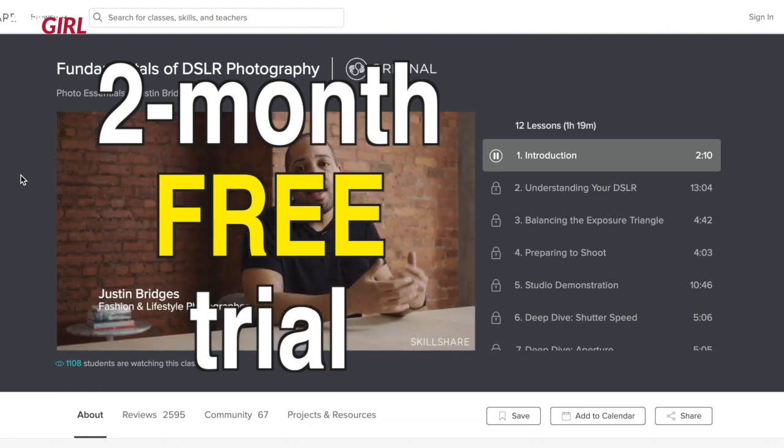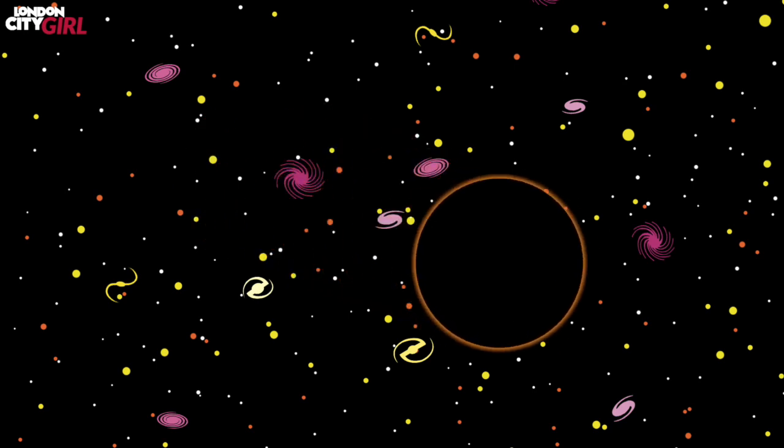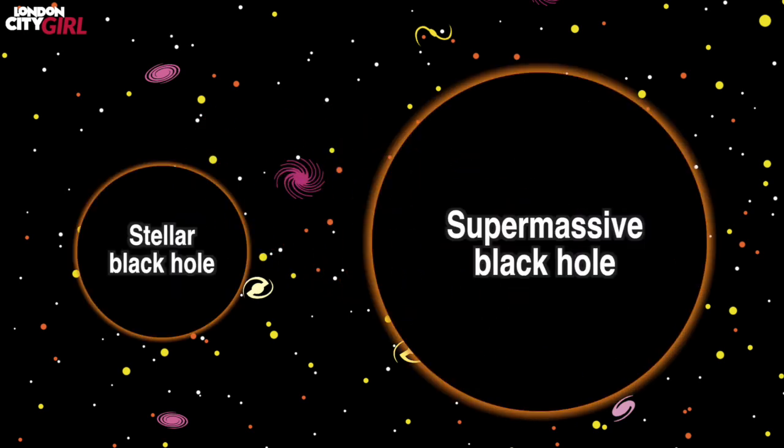Now back to black holes. A black hole is essentially an invisible star that moves through space. Black holes also come in different sizes. Stellar black holes are formed when the collapsed core of the star is at least about three times the mass of our sun.